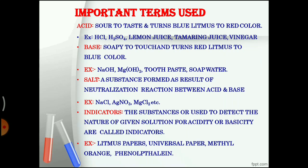Salt. Salt is a substance formed as a result of a neutralization reaction between an acid and a base. Examples for salts: NaCl, sodium chloride — generally we call it table salt we use in our houses daily — silver nitrate AgNO3, and MgCl2, magnesium chloride.